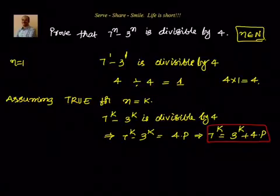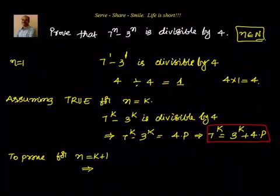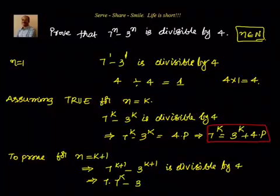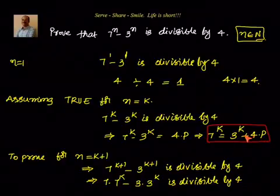The next step: we have to prove for n equal to k plus 1. As part of that, I have to prove 7 to the power of k plus 1 minus 3 to the power of k plus 1 is divisible by 4. Now, 7 to the power of k plus 1 is 7 into 7 to the power of k, so we have 7 into 7 power k minus 3 into 3 power k is divisible by 4. We already know 7 power k equal to 3 power k plus 4 into p, so that value we can substitute here and we should be able to prove this easily.